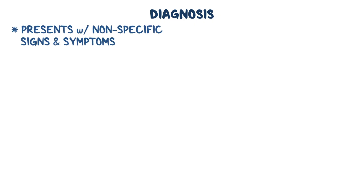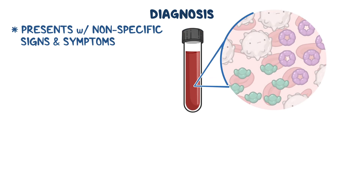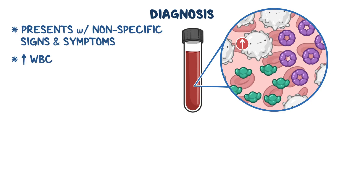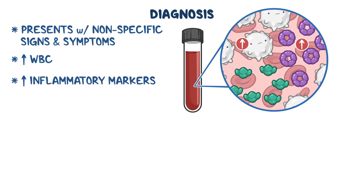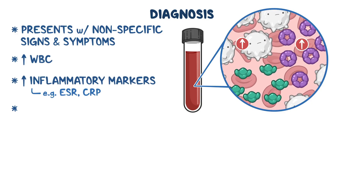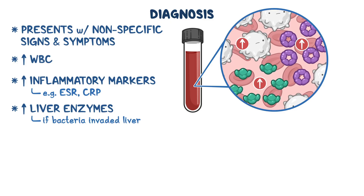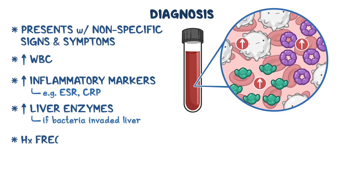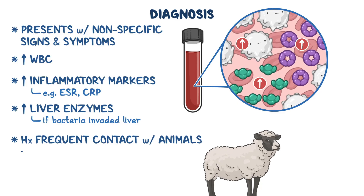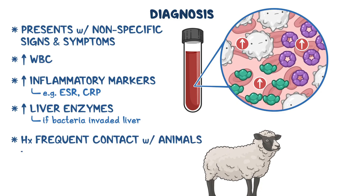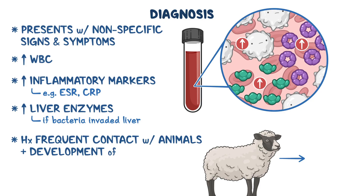The diagnosis of Q fever is tricky because the disease presents with nonspecific signs and symptoms, so it may not be obvious to test for C. burnetii. General laboratory studies usually demonstrate an elevated white blood cell count, elevated inflammatory markers like ESR or CRP, and elevated liver enzymes if the bacteria invade the liver. Q fever should be suspected in patients with a history of frequent contact with animals like cattle, sheep, or goats, and subsequent development of compatible symptoms.